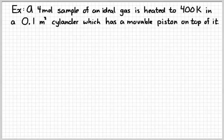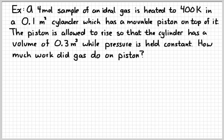So let's take a real simple example. Suppose we have 4 moles of an ideal gas which is heated to 400 Kelvin in a 0.1 cubic meter cylinder which has a movable piston on top of it. We let this thing expand so that the cylinder now has a volume of 0.3 cubic meters while we hold the pressure constant. So one thing you might think of is how do we actually do that? Physically what would you do to keep the pressure in there constant? The question here however is just how much work did the gas do on the piston? So our equation is work equals negative PΔV.